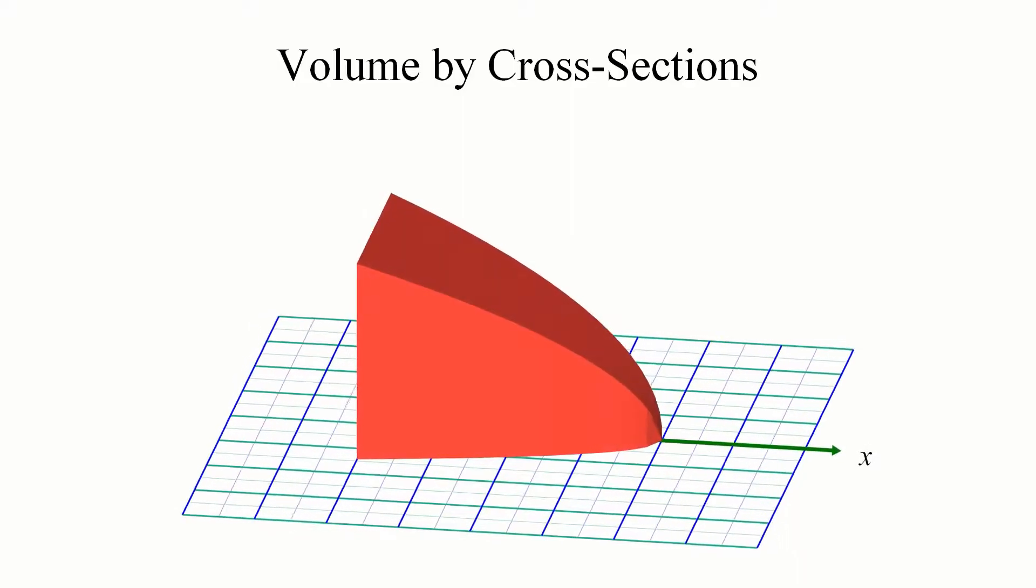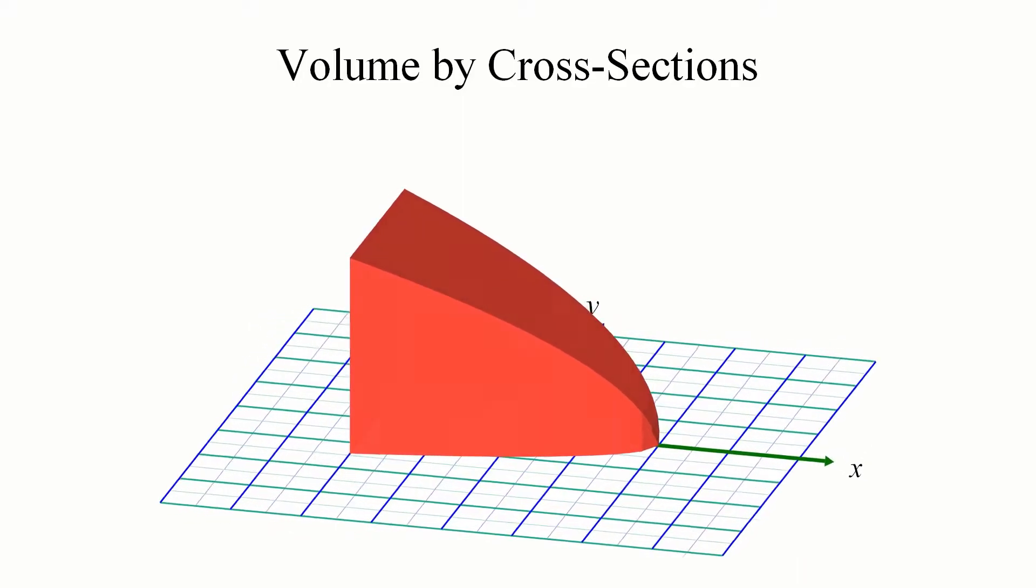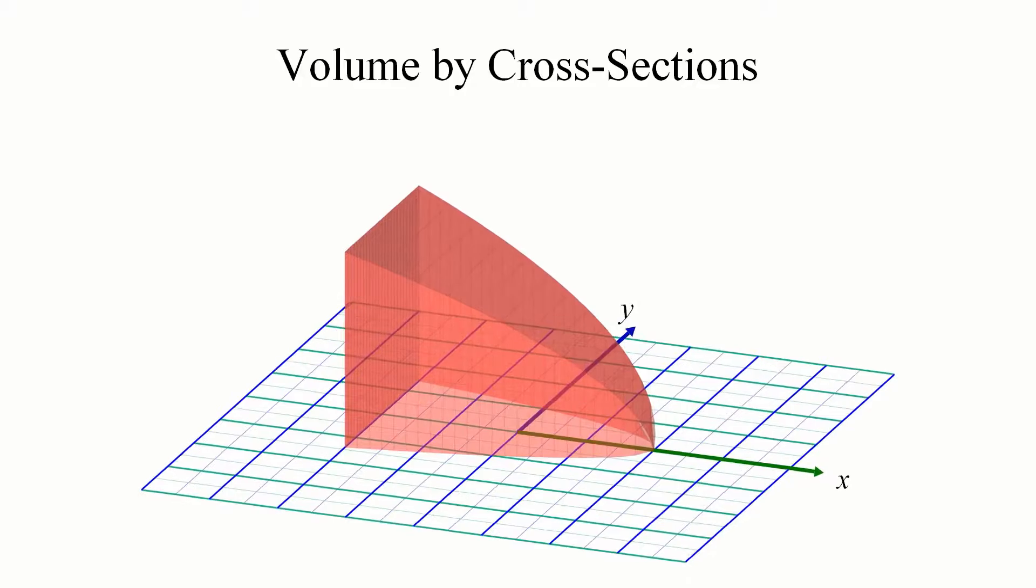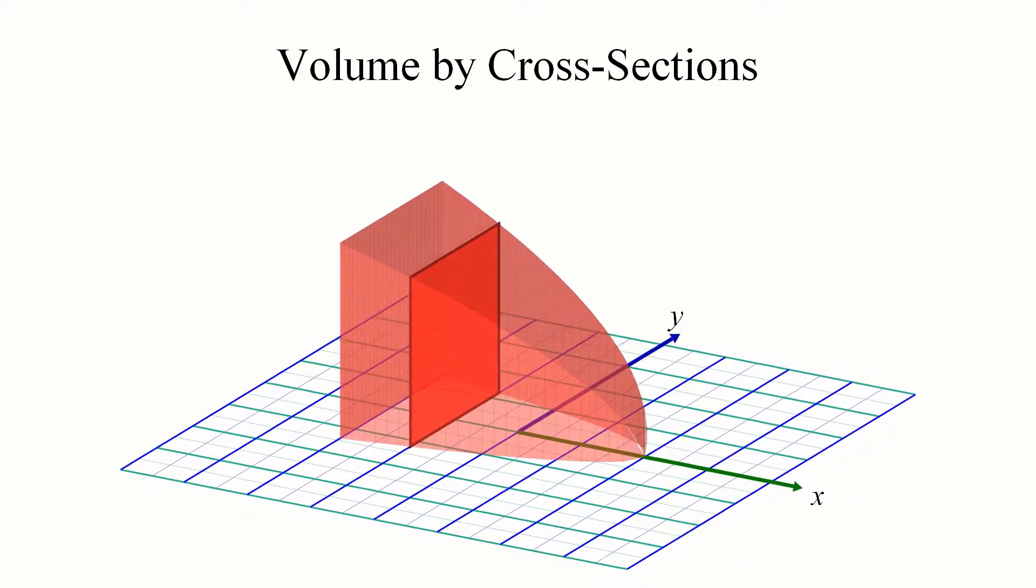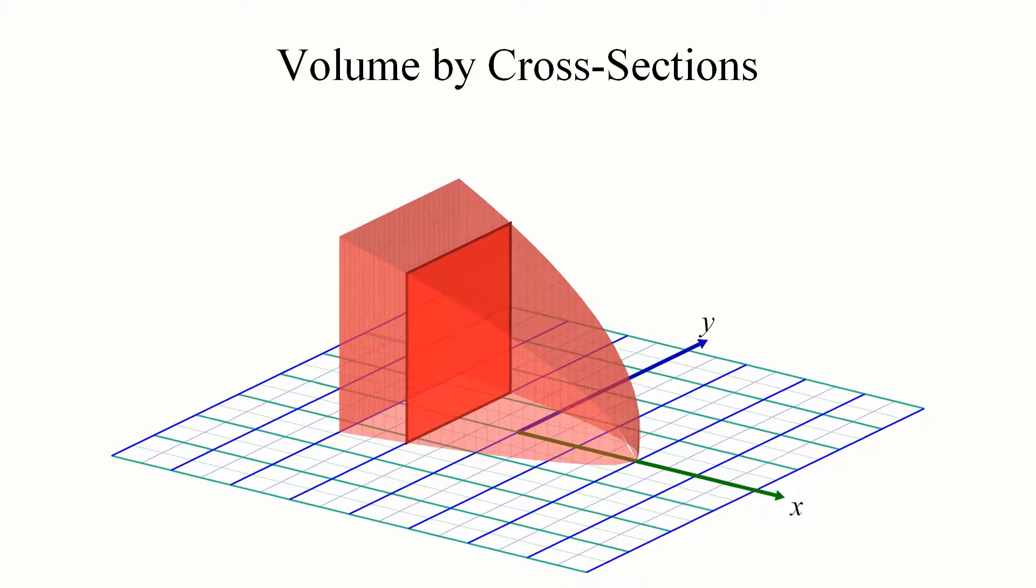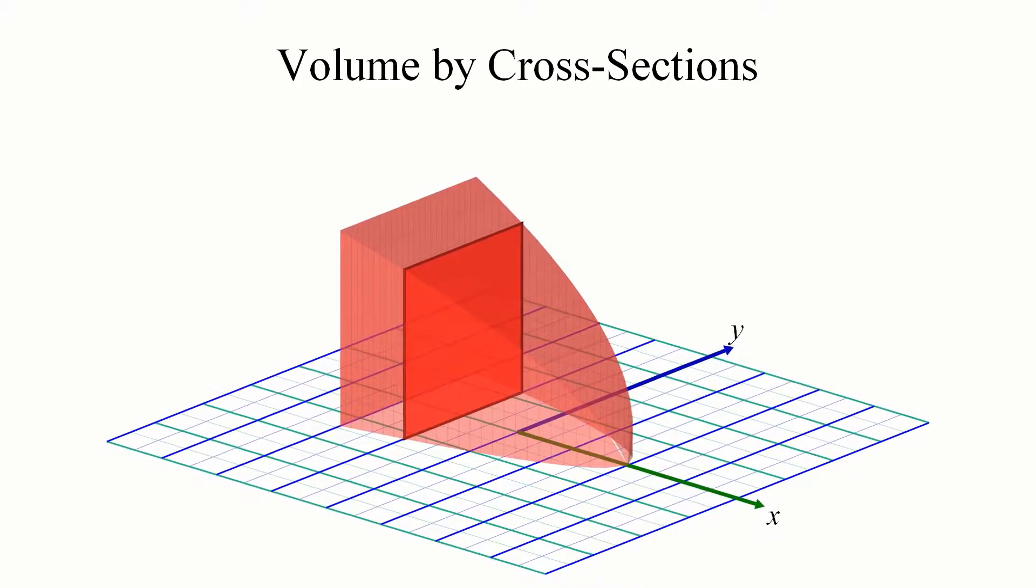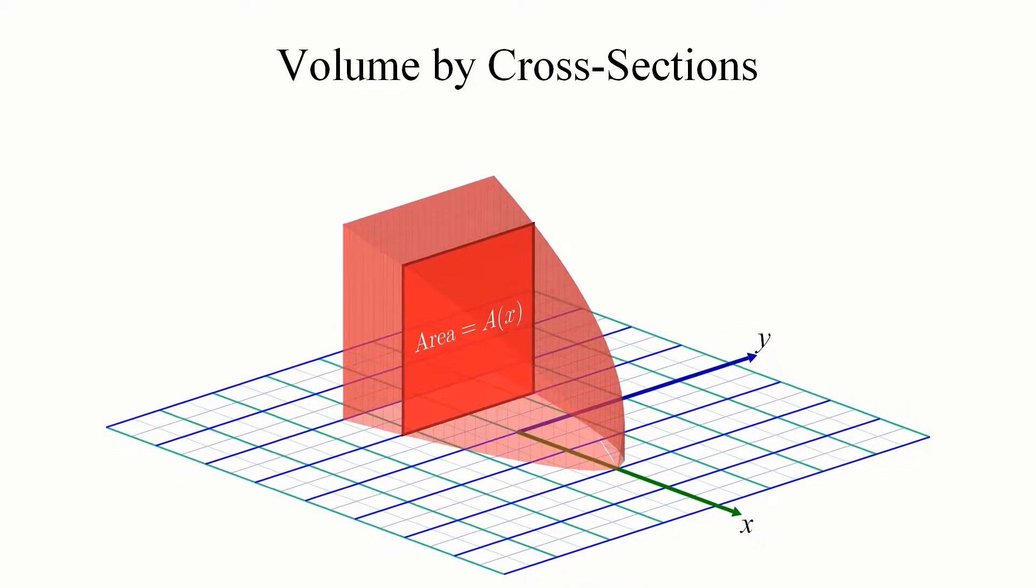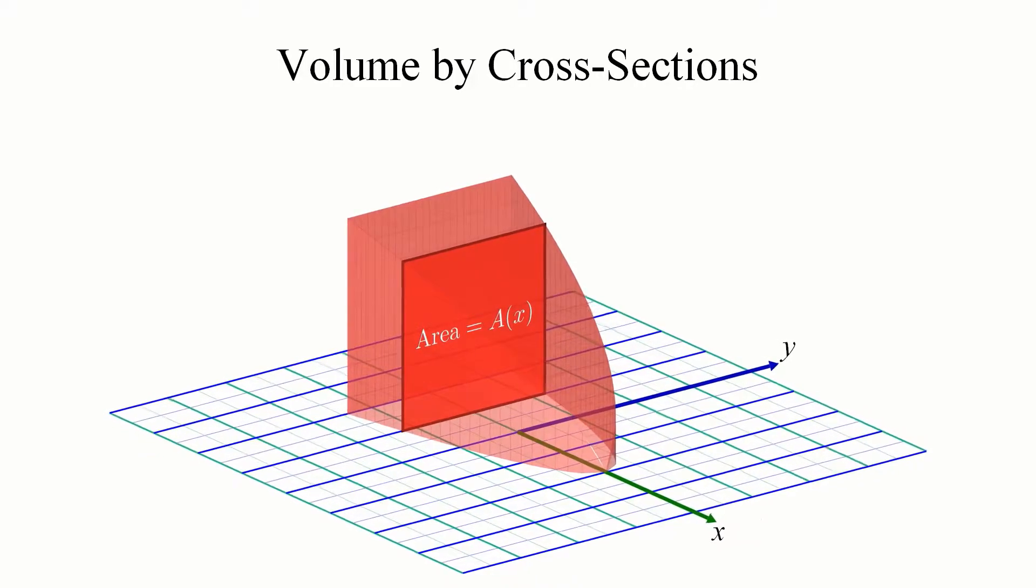If you have a solid whose slices along a particular axis all have a certain regular shape, like a square for instance, you could compute the volume of the solid by first finding a formula that computes the area of any particular slice located at any given point.